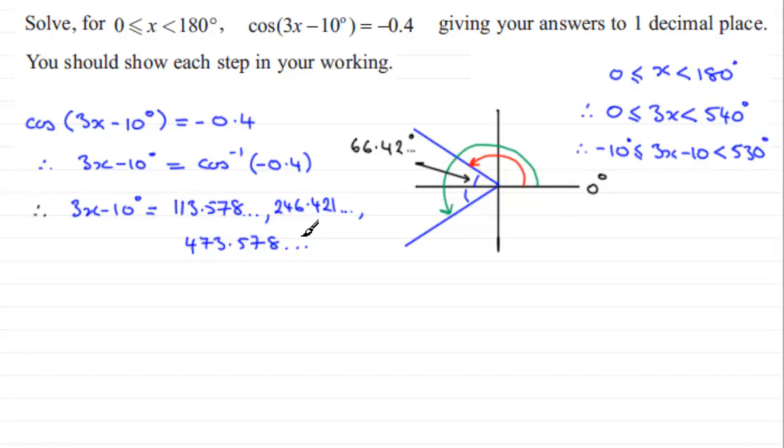So all I need to do now is add 10 degrees to each one of these and then go on to divide each one of them by three. If we add 10 degrees to each one, let's just say that we would have 3x equals, I'm going to show each step of the working—you could I would imagine leave this step out—but if we add 10 degrees to each one we would get 123.578 and so on.